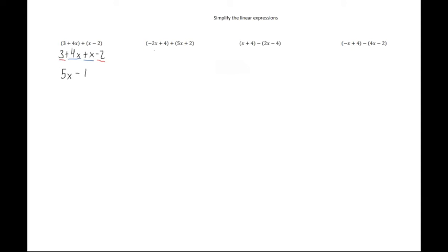In the second problem we have minus 2x plus 4 plus 5x plus 2. There's no operations being done on the parentheses, so we break it out of the parentheses just like last time. Minus 2x plus 4 plus 5x plus 2. Again we're going to collect like terms. We have two constants, 4 and 2, and two variables, minus 2x and plus 5x.